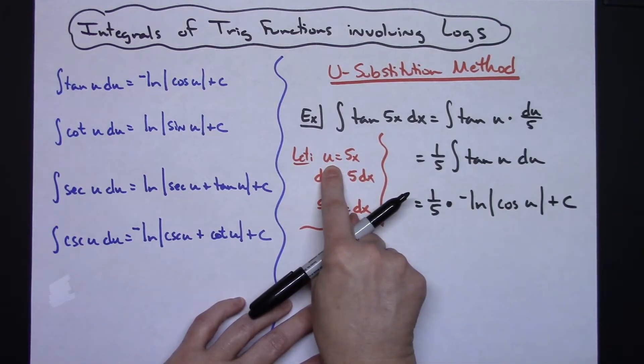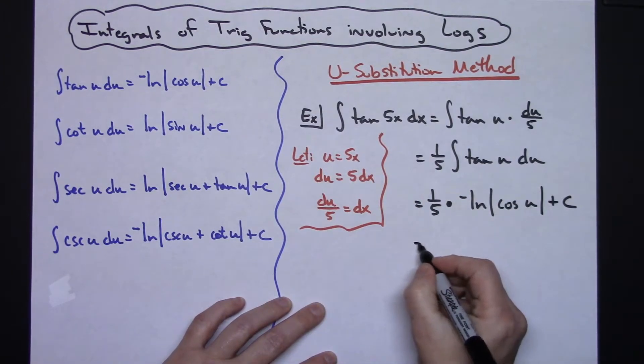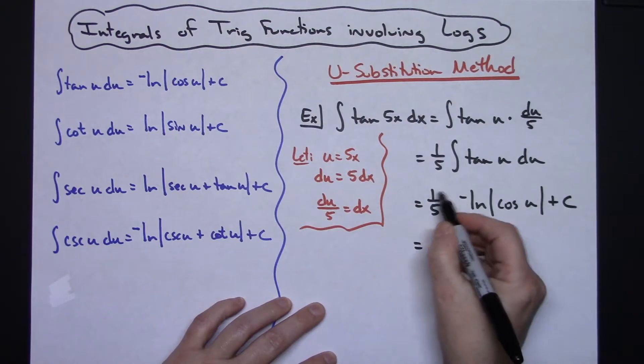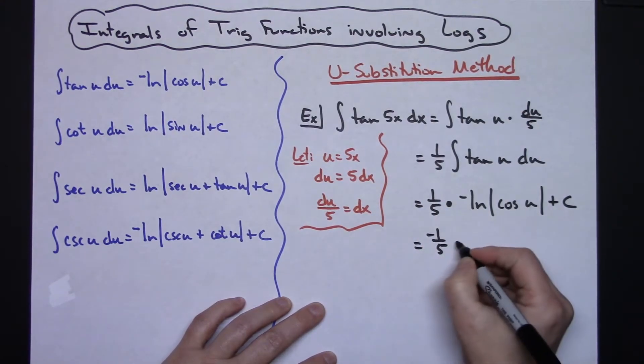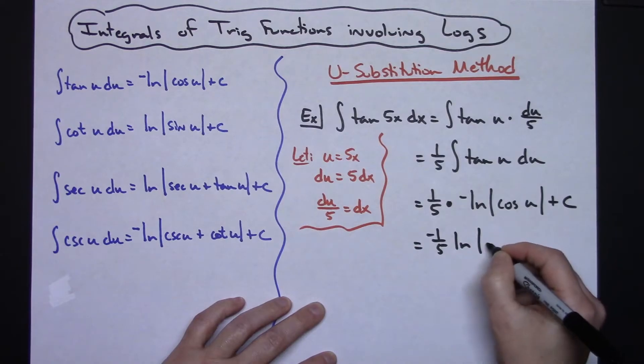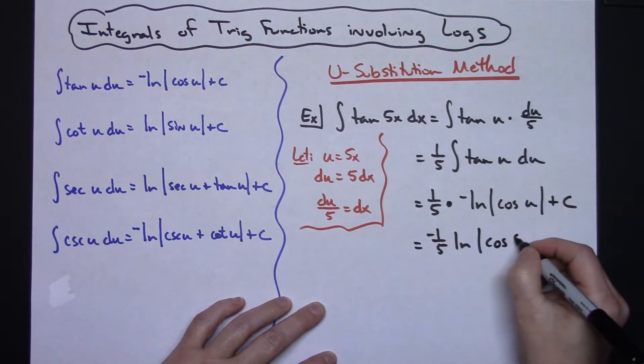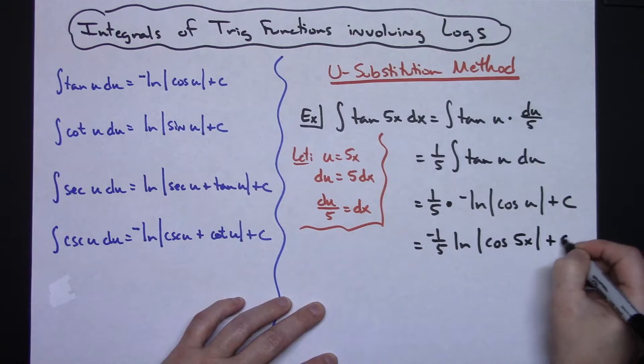Now for my last step I need to take my u and plug it back in. For a final answer I'm also going to pull that negative out front, so negative one-fifth natural log absolute value cosine 5x plus c.